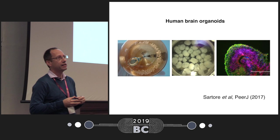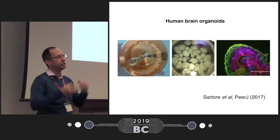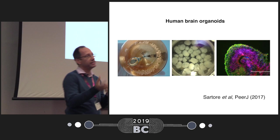Besides that, we can also create what are called brain organoids. These are aggregates of cells that grow up to five to six millimeters. They have the layers that we see in the brain, and we can work with connections, synapses, and everything you can see in the real brain — but they come from the skin or urine of anyone in this audience, for example.